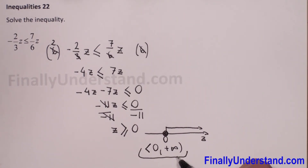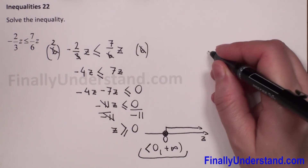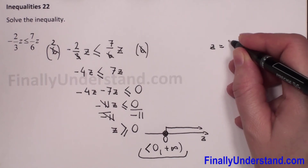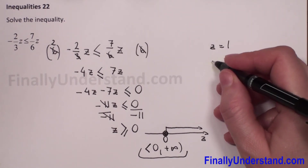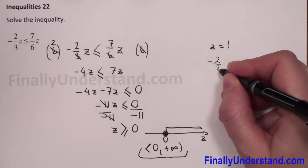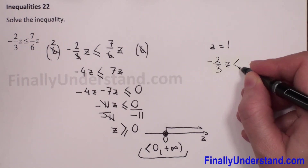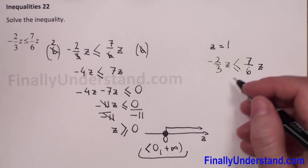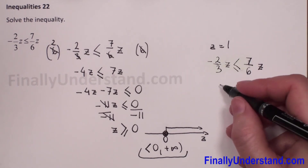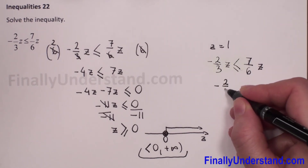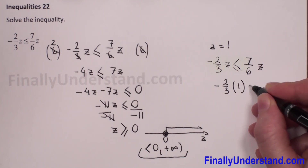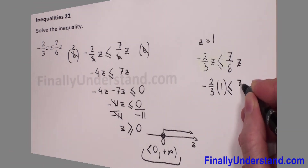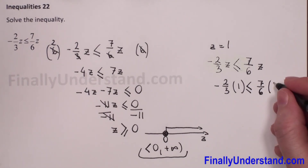Now I have to choose one number from this interval and check if the inequality is true. We can choose z equals 1. I'll copy the original inequality: negative 2 over 3 times z is less than or equal to 7 over 6 times z. Replacing z with 1, we get negative 2 thirds times 1 is less than or equal to 7 over 6 times 1.